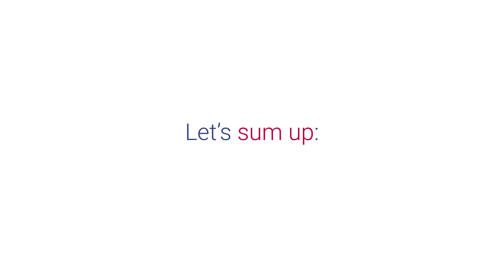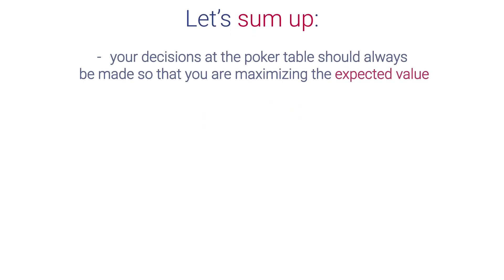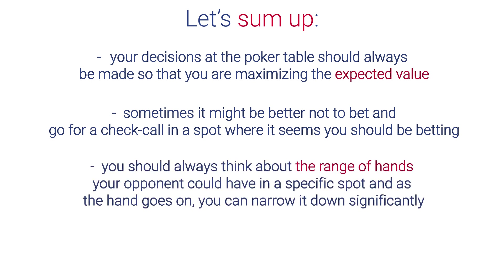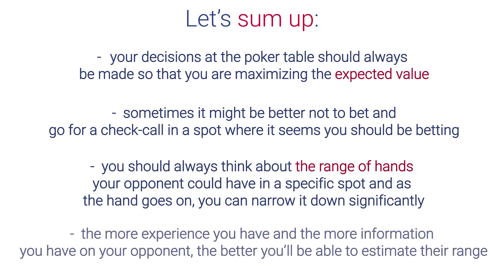Okay great, let's sum up what you've learned. You now know that your decisions on the poker table should always be made so that you are maximizing the expected value. As you've seen in the example, it's sometimes better not to bet and go for a check-call in a spot where it seems you should be betting. You should always think about the range of hands your opponents could have in a specific spot, and as the hand goes on you can narrow it down significantly. Of course, the more experience you have and the more information you have on your opponent, the better you'll be able to estimate their range.